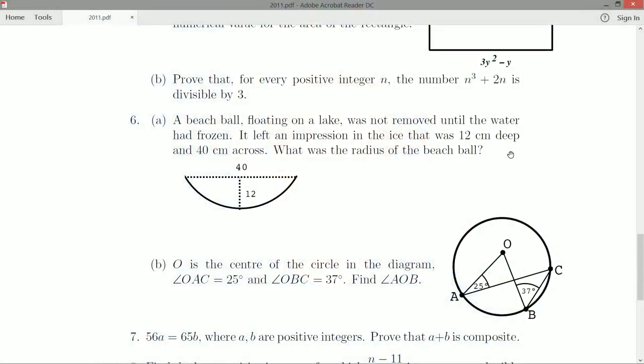Part A, a beach ball floating on a lake was not removed until the water had frozen. It left an impression in the ice that was 12 centimeters deep and 40 centimeters across. So this is a cross-sectional look here, and it looks like we have a chord of a circle. What is the radius of the beach ball?